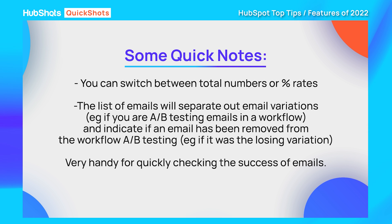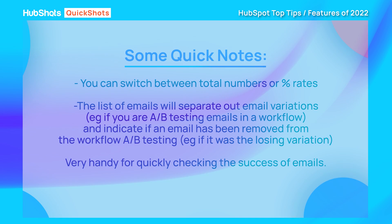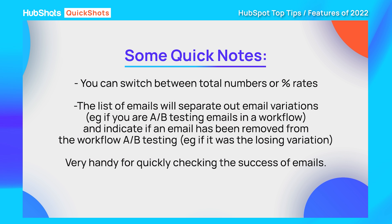You can actually switch between total counts versus percentage rates as well. It's really useful — you can very quickly see which emails are getting opened, which gives you valuable insights on subject lines, and you can see which ones are getting clicked. It also includes A/B testing variations, showing you the variations and whether an email was selected as a winner or loser, and whether it's been removed from the workflow.